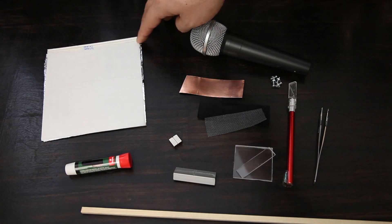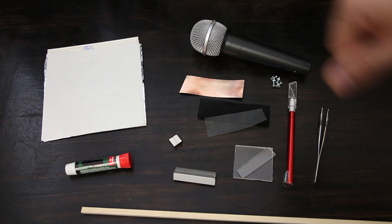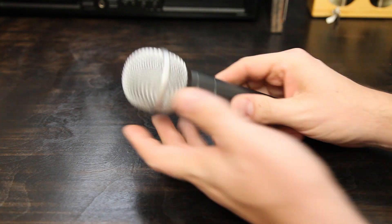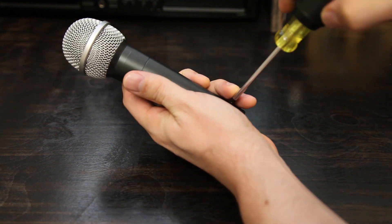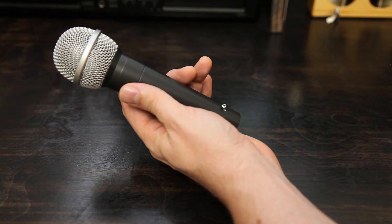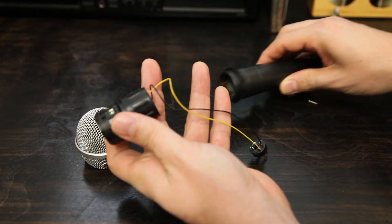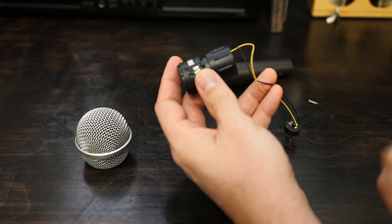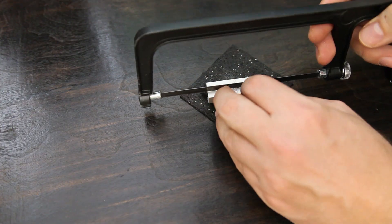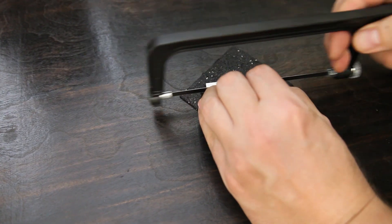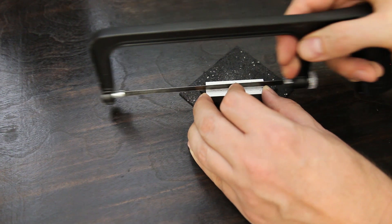We'll also need screws, copper tape, acrylic, and the all-important aluminum. I'm just going to assemble this mic using these same cables. This is the chassis.